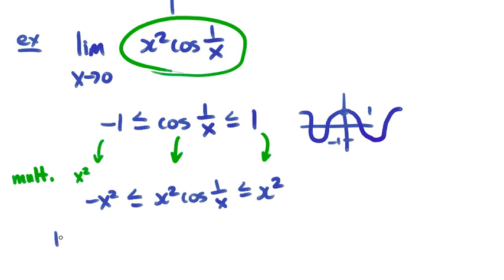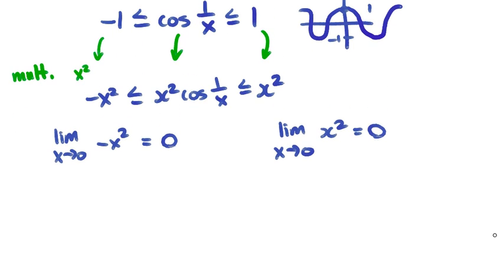Now, the limit as x approaches 0 of negative x squared is easy to find by the substitution method. And the limit as x approaches 0 of x squared is also easy to find. Since those are equal, the limit as x approaches 0 of our more complicated function will also equal 0.